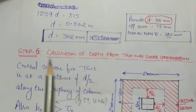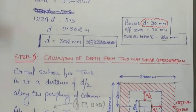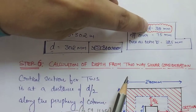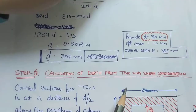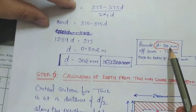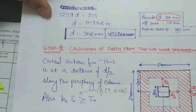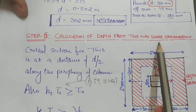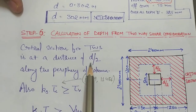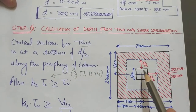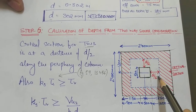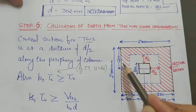Step six is the calculation of depth from two-way shear consideration. We check whether the adopted depth of 310 mm is sufficient to carry two-way shear. In two-way shear, the critical section is at a distance D/2 from the periphery of the column on all four sides, forming a shaded perimeter around the column.